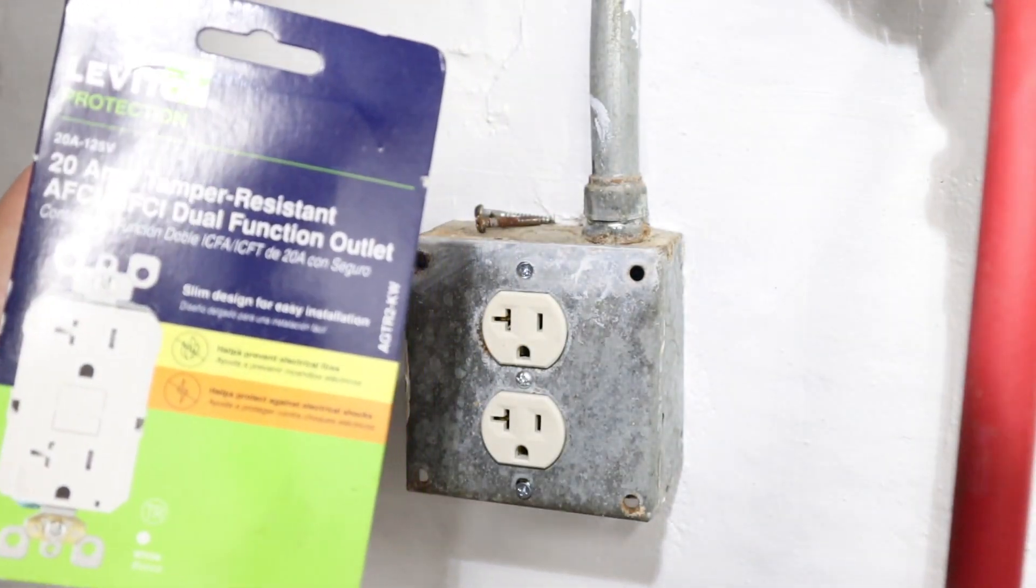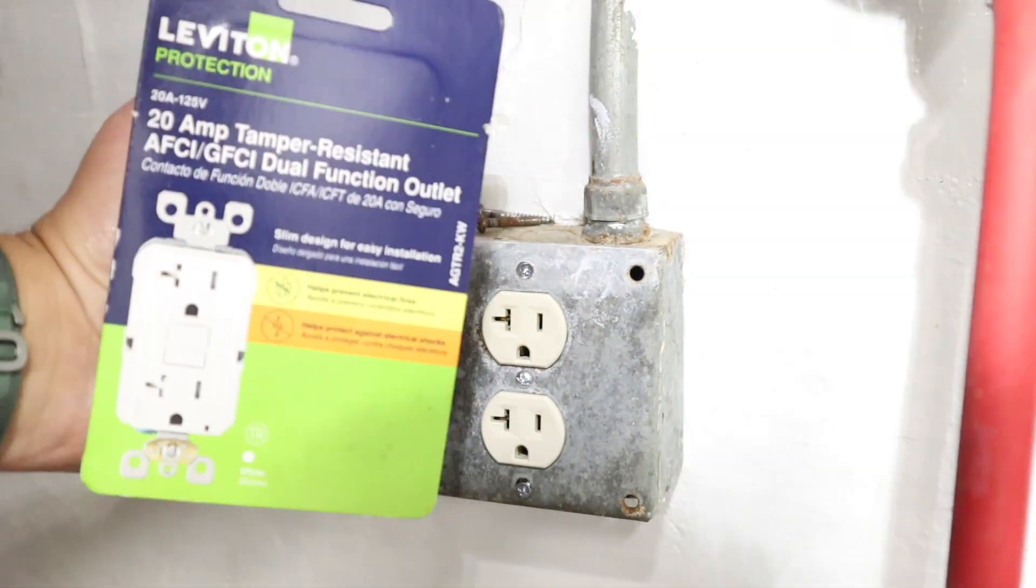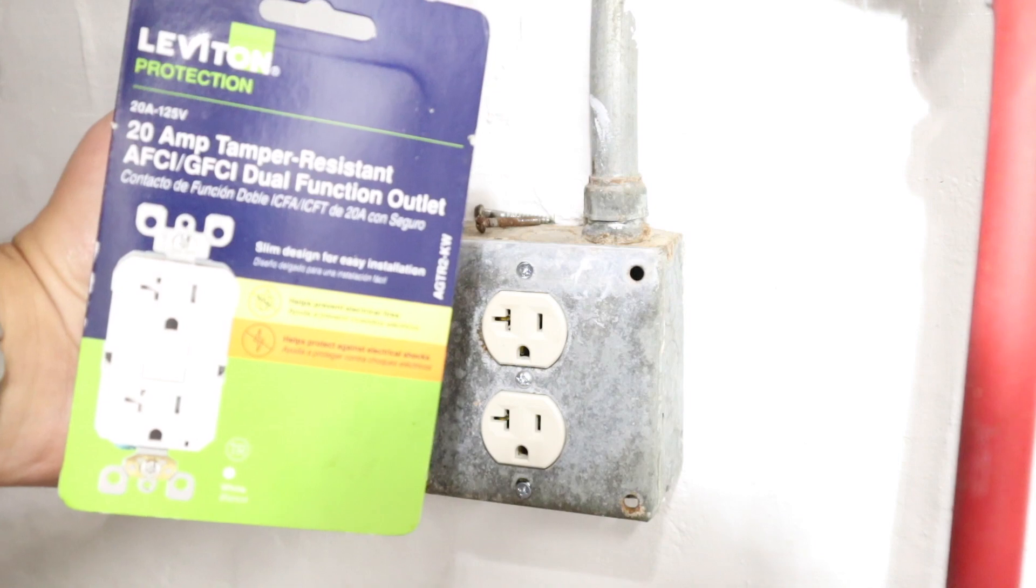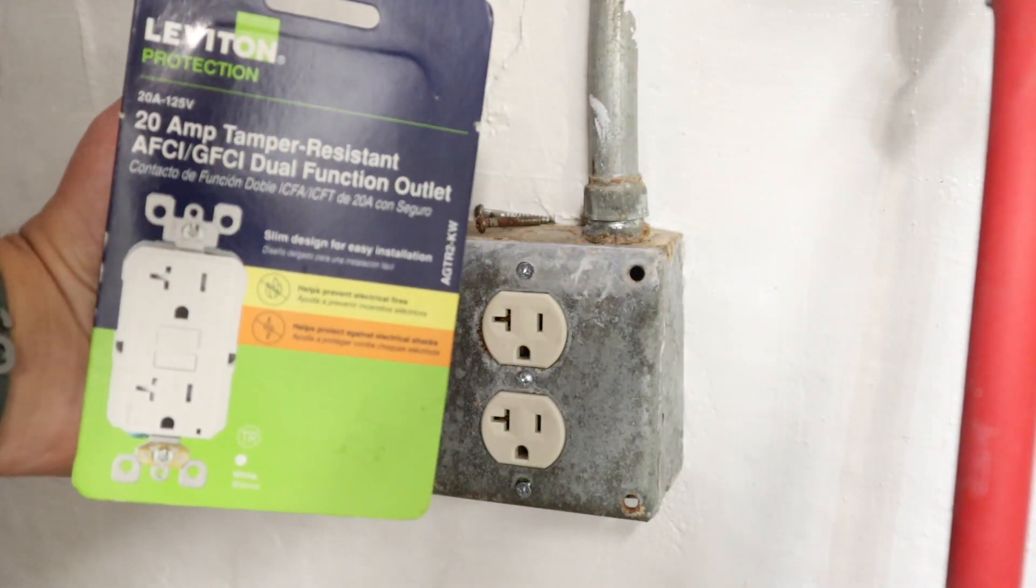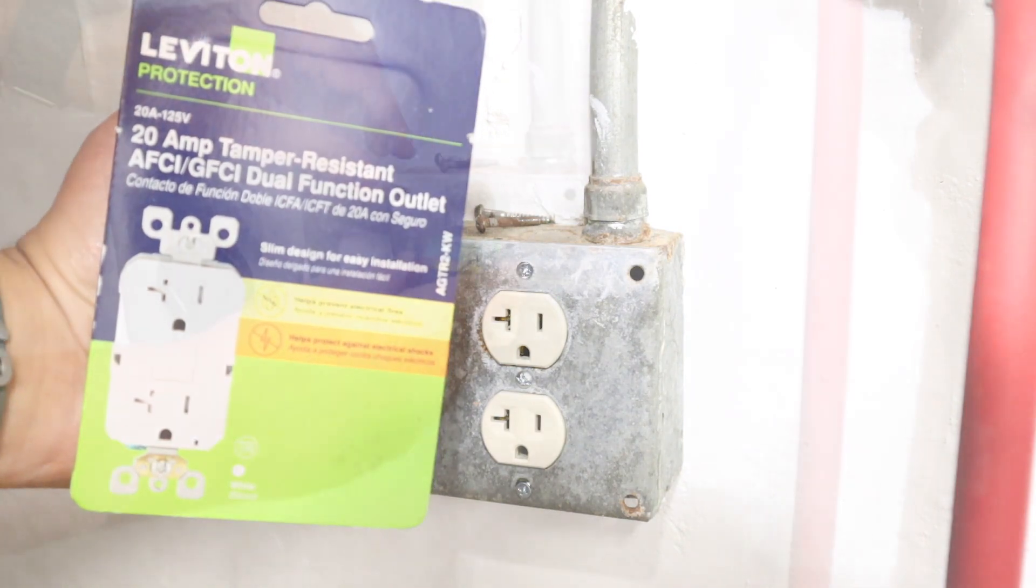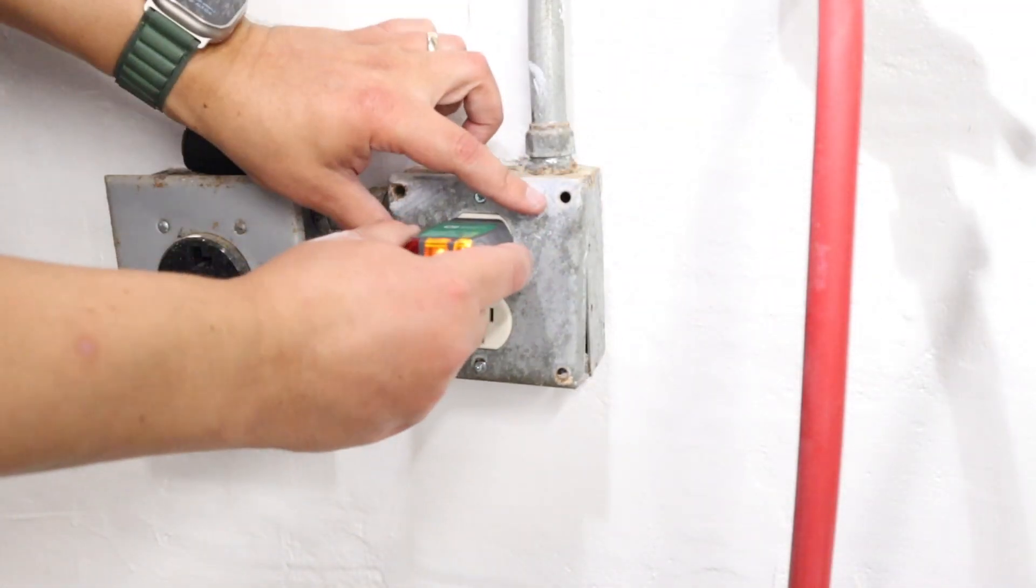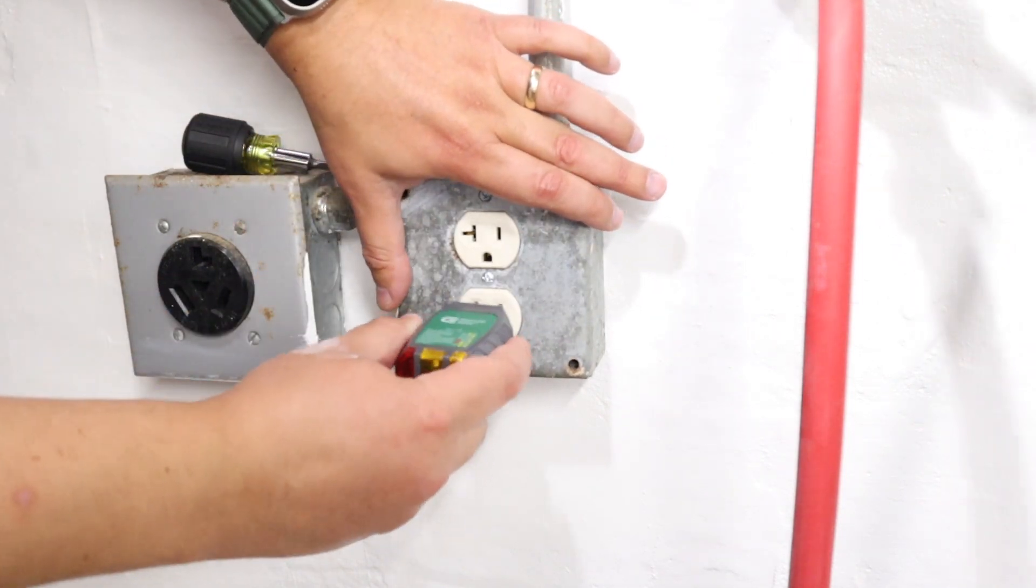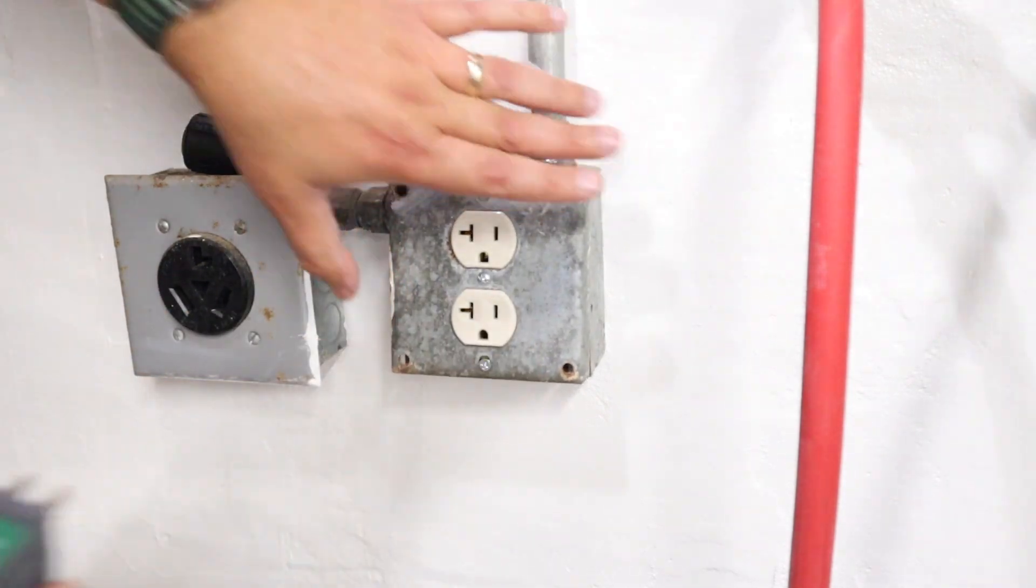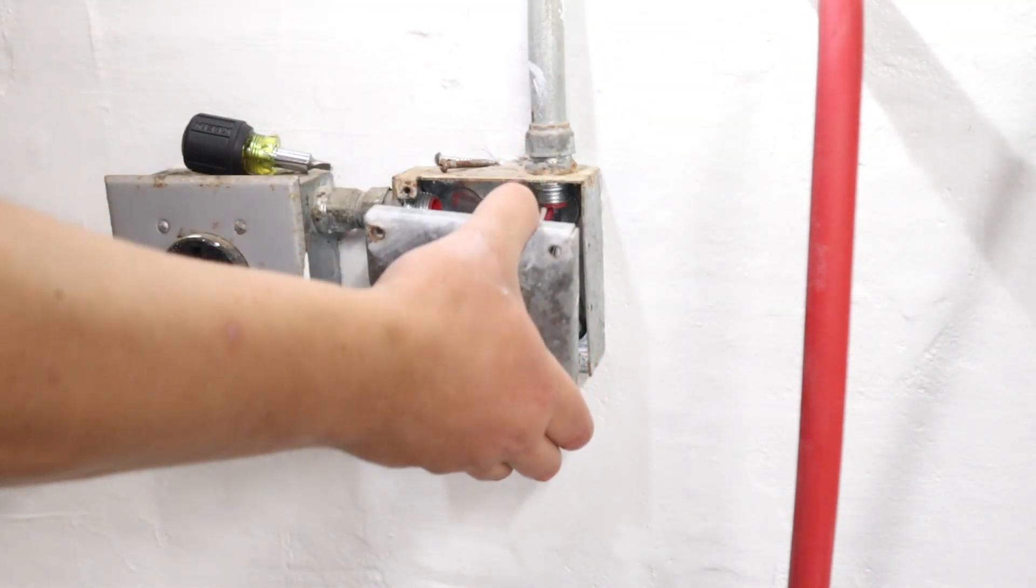Although it still does not have the ground wire because I'm using the same wiring, this will make it safer in that the GFCI will trip and protect from any kind of electrocution. It is reading correctly now, so we're going to go over here.